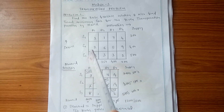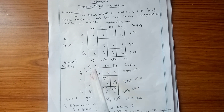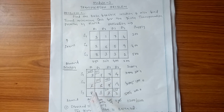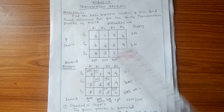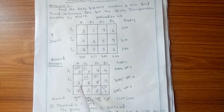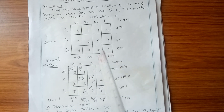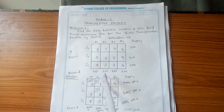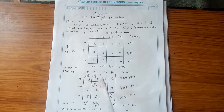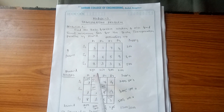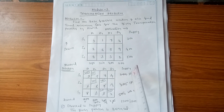Whichever number you allocate — if it equals the least value — delete that corresponding column or row. Since demand is now 0, delete that column. Remaining boxes are D2, D3, D4. Select the first box, which is cost 1. Check: demand is 350, supply remaining is 50. So 50 is the least value.